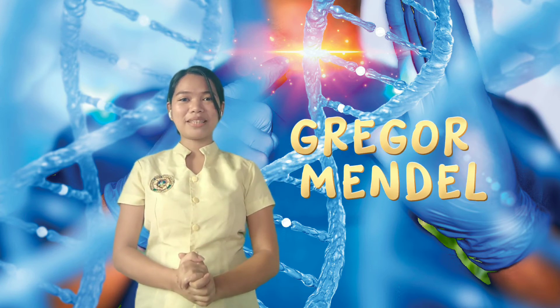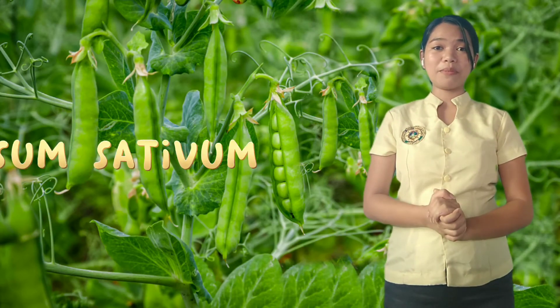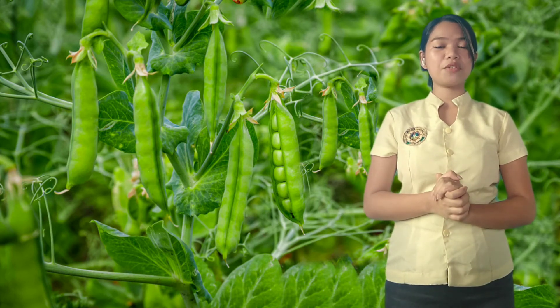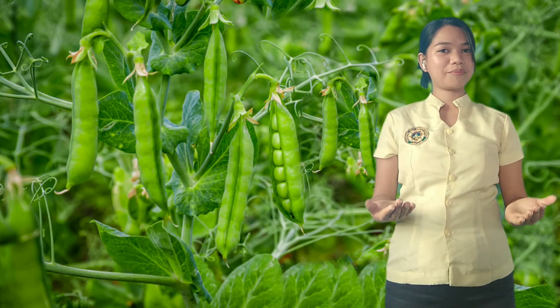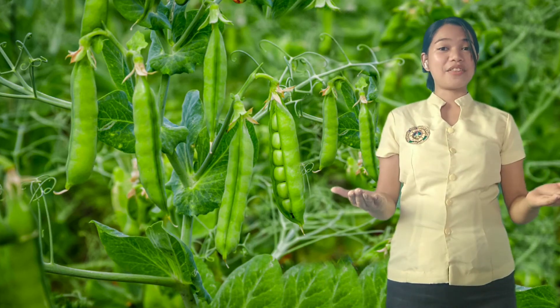Can you still recall who is the father of genetics? Great! That's Gregor Mendel. Using Garden Peas or Pisum sativum, Mendel showed that factors of inheritance are transferred from parents to offspring. In modern genetics, these factors of inheritance are called genes. According to Mendel, there exists a pair of genetic materials in every organism that segregates during gamete formation. What do you call this pair of genetic material? Amazing! It is the phenotype and the genotype.